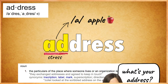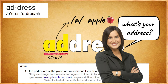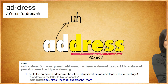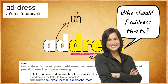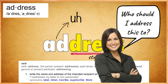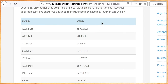So in Denise's case, when using the noun she might say, 'What's your address?' or 'Let me just confirm your address real quick — is it...?' And when using the verb: 'Who should I address this to?' Technically you could say 'To whom should I address this?' but in my opinion there's no problem with ending a sentence with a preposition, so I would say 'Who should I address this to?'